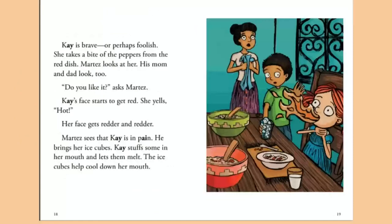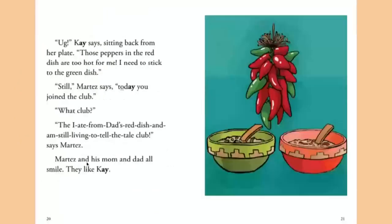Kay stuffs some ice cubes in her mouth and lets them melt. The ice cubes help cool down her mouth. 'Ugh,' Kay says, sitting back from her plate. 'Those peppers in the red dish are too hot for me. I need to stick to the green dish.' 'Still,' Martez says, 'today you joined the club.' 'What club?' 'The I-ate-from-dad's-red-dish-and-am-still-living-to-tell-the-tale club,' says Martez. Martez and his mom and dad all smile. They like Kay.